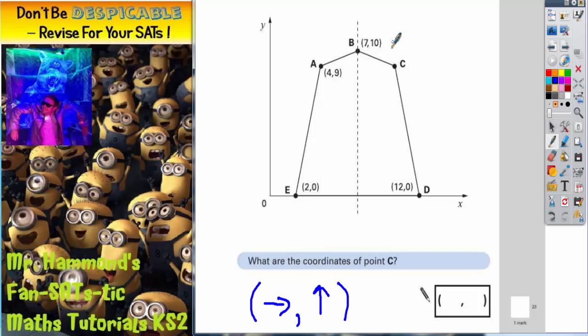Now we are told that the pentagon is symmetrical. And this dotted line down here is our mirror line. So let's have a look at point C. Now the first thing you should notice is that point C is actually symmetrical with point A.